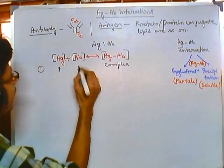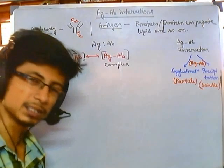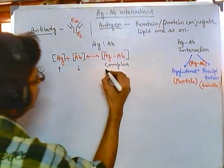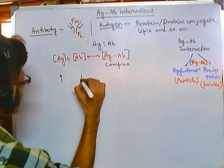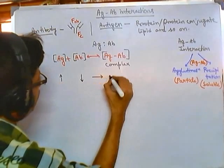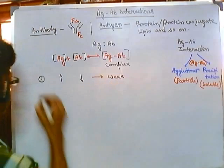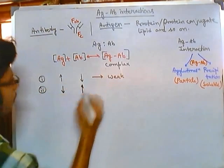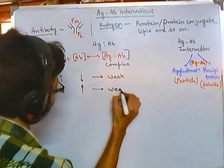If the concentration of antigen is high and antibody is low, can we get an antigen-antibody complex? Yes, we can, but the complex will be weak. That is situation one — we get a pretty weak complex, but we do get a complex. If we have less antigen and high antibody, can we get a complex? Yes, we also get a complex, which can also be weak.